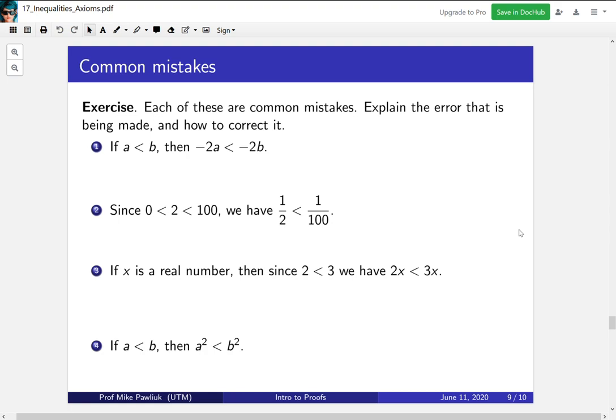All right, so what's going on in the first one? So it looks like the person multiplied by minus two, and forgot to change the way that the inequality faces. So they incorrectly applied axiom two. What's going on in number two? Well, it looks like they took a reciprocal, but then forgot to switch the order. So they need to remember that in axiom six, reciprocals change the order of the inequality.